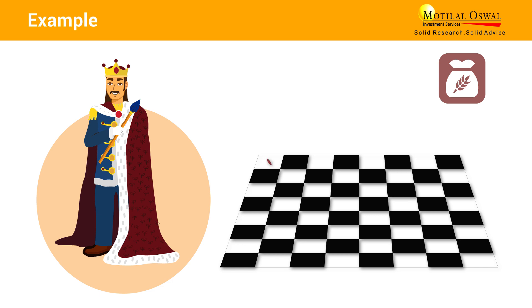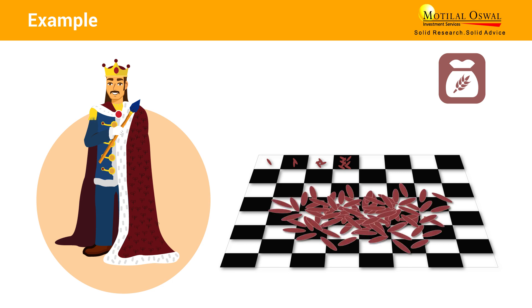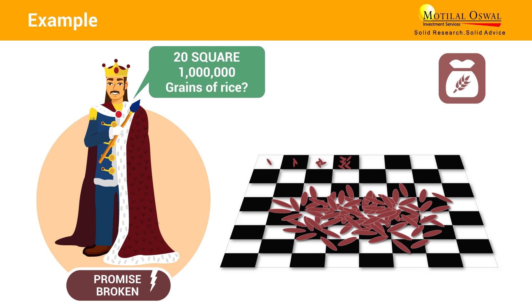One grain on the first square, two on the second, four on the third, eight on the fourth and so on. Following the exponential growth of rice payment, the king quickly realized that he was unable to fulfill the promise because on the 20th square the king would have had to put ten lakh grains of rice.